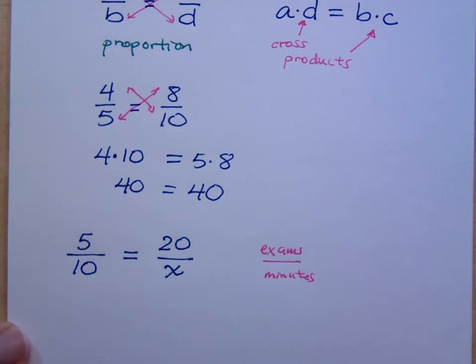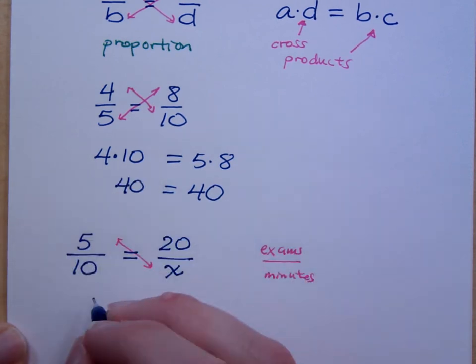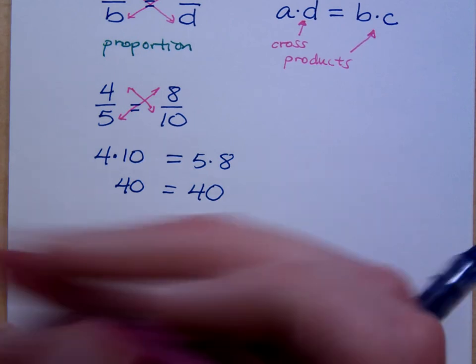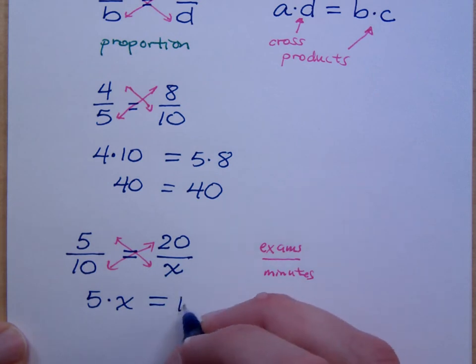Using the algebra though, and working with proportions and cross products, cross products being equal tells me that the product here of 5 times x should equal the product across this way, which is 10 times 20.